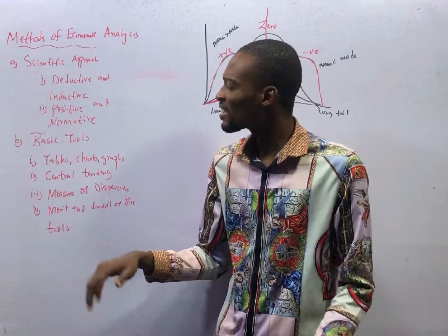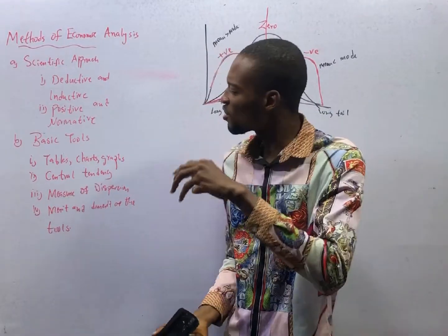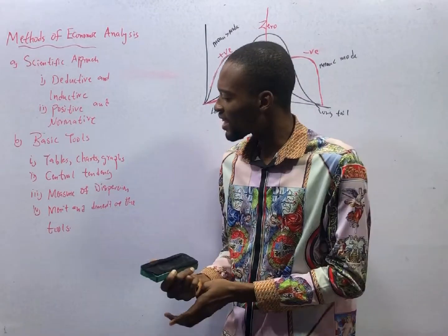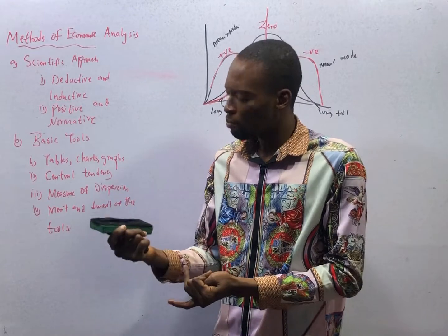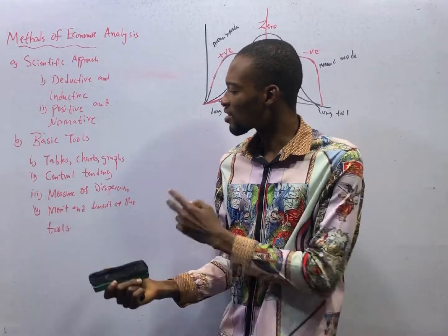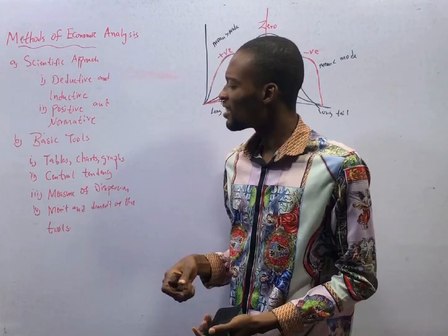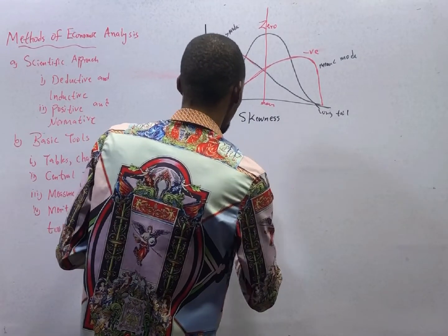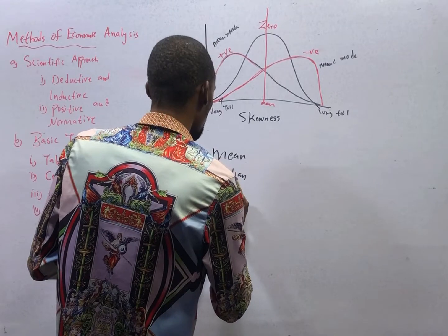Now, basic economics tools. The tools we use in economics are tables, charts, graphs, bar charts, pie charts, histogram, component bar charts, multiple bar charts, and plotting of graphs. Then central tendency is divided into mean, median, and mode.